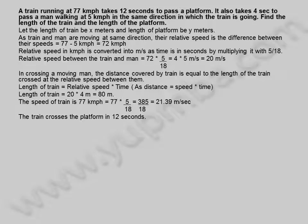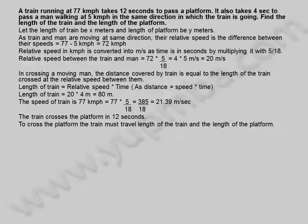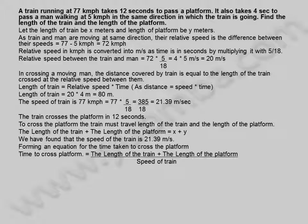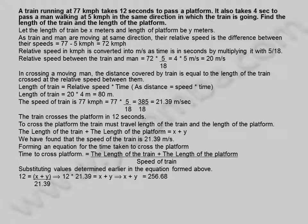The train crosses the platform in 12 seconds. To cross the platform, the train must travel the length of the train and the length of the platform. The length of the train plus the length of the platform equals x plus y. The speed of the train is 21.39 meters per second. Forming an equation: time to cross platform equals the length of the train plus the length of the platform divided by speed of train. Substituting values: 12 equals x plus y divided by 21.39.